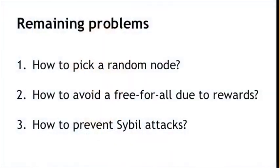If we address a few more remaining problems, we'll have a really good understanding of how Bitcoin achieves decentralization. The first major one is the leap of faith that I asked you to take — that somehow we can pick a random node. The second is that we've created a new problem by giving nodes these block rewards: you could easily get a free-for-all where everybody wants to run a Bitcoin node hoping to capture some of these rewards. A third, even trickier version of this problem is that an adversary might create a whole different number of Sybil nodes in order to subvert the consensus process.